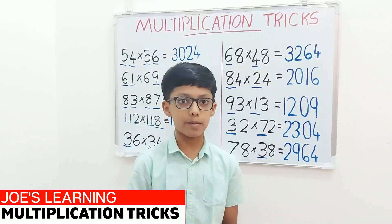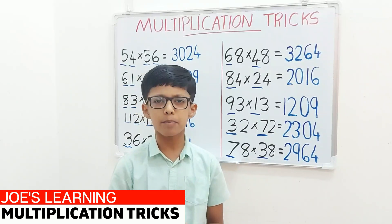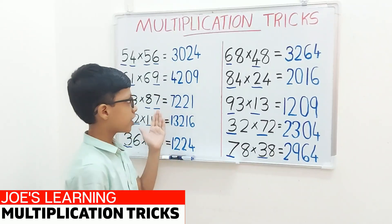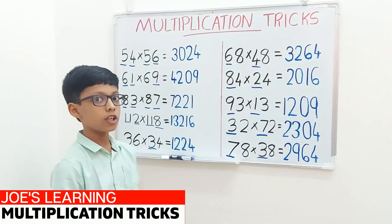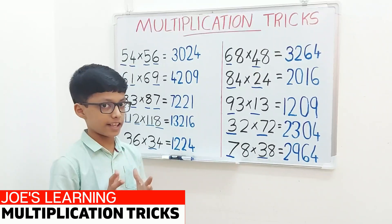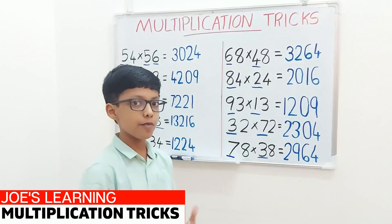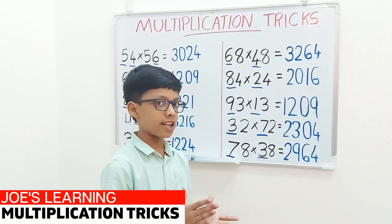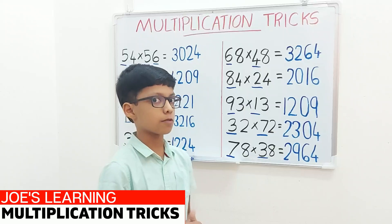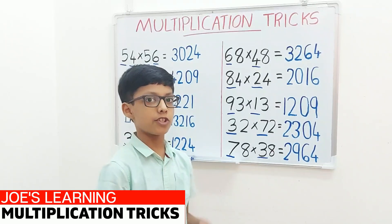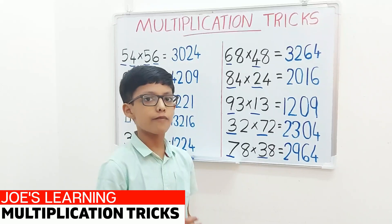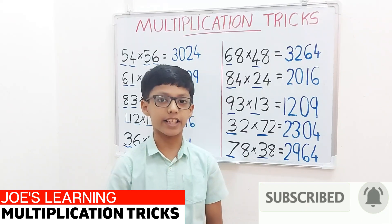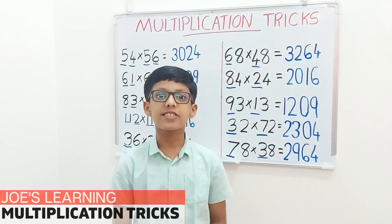So we can use these easy multiplication tricks to solve particular numbers in 2 seconds. But remember: if you want to use the first trick, the sum of the ones place should equal 10 and the digits before that should be the same. If you want to use the second trick, the sum of the digits in the tens place should be 10 and the digits in the ones place should be the same. I hope you understood these multiplication tricks. If you like this video, please subscribe and enable the bell icon to get notifications on my latest videos. Bye friends, thank you for watching.